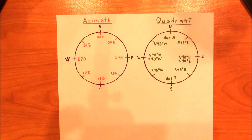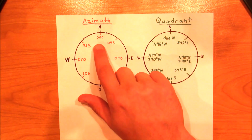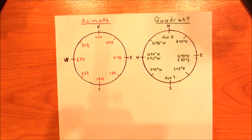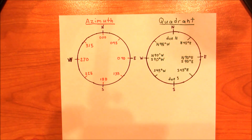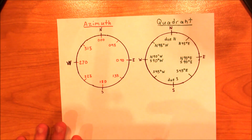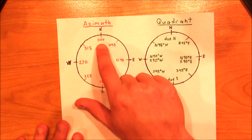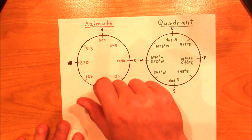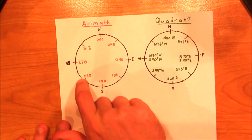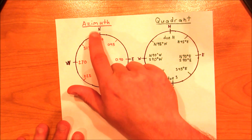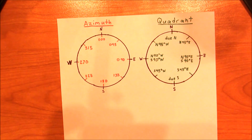In geology, most people tend to use azimuth directions, but I'm going to teach you about both. With azimuth directions, we recognize that every direction around the compass has three numbers, and this is done to help alleviate some ambiguity later on. If we want to represent due north, we simply say 000 degrees. If we want to represent any other direction, we move clockwise around the circle until we get back to 359 degrees, just continuing to increase. It's a pretty simple idea.